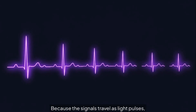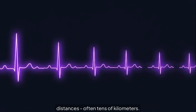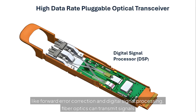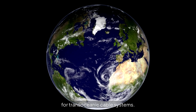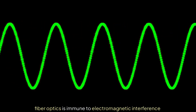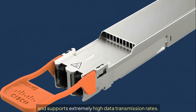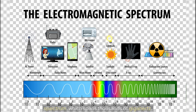Because the signals travel as light pulses, fiber optics enables communication over very long distances, often tens of kilometers. When used with optical amplifiers and other advanced technologies like forward error correction and digital signal processing, fiber optics can transmit signals across thousands of kilometers. In addition, fiber optics is immune to electromagnetic interference and supports extremely high data transmission rates, due to the vast amount of available optical spectrum, which spans thousands of gigahertz.